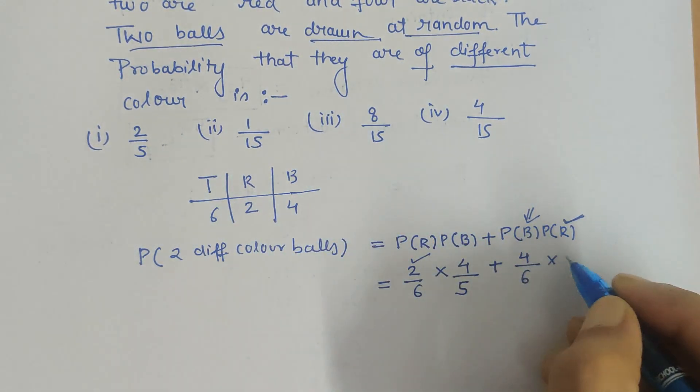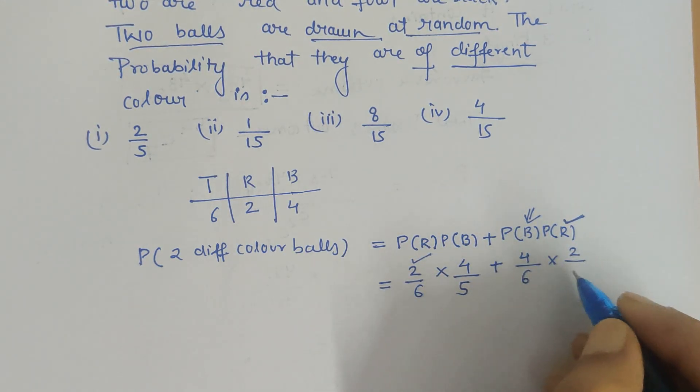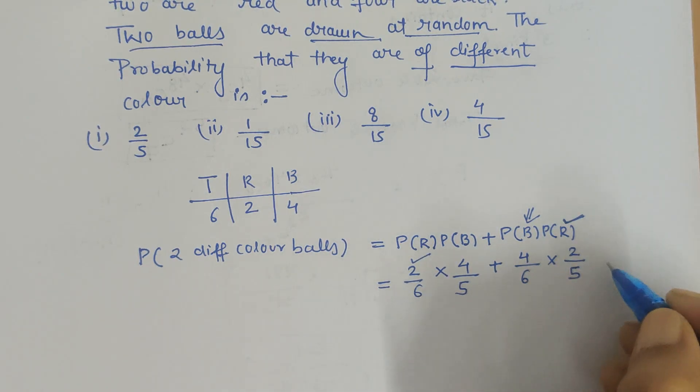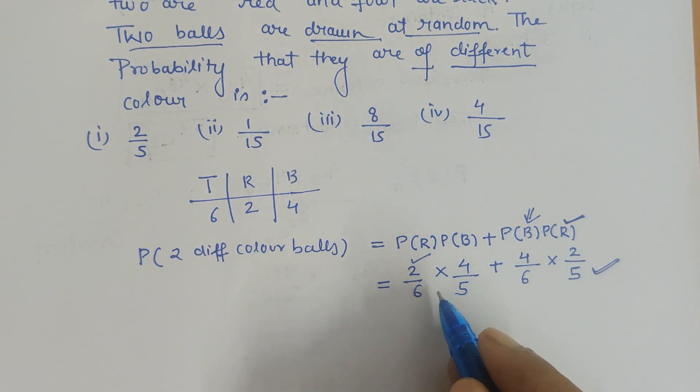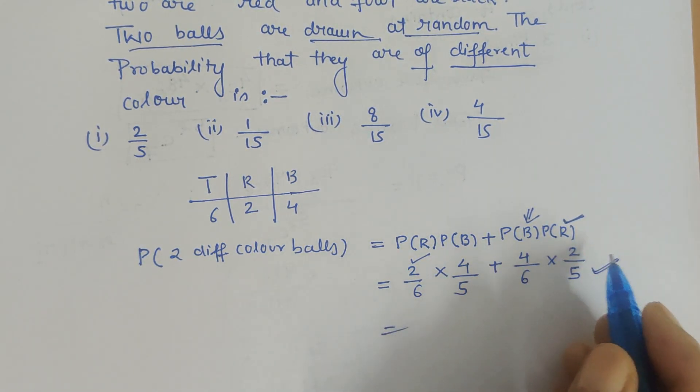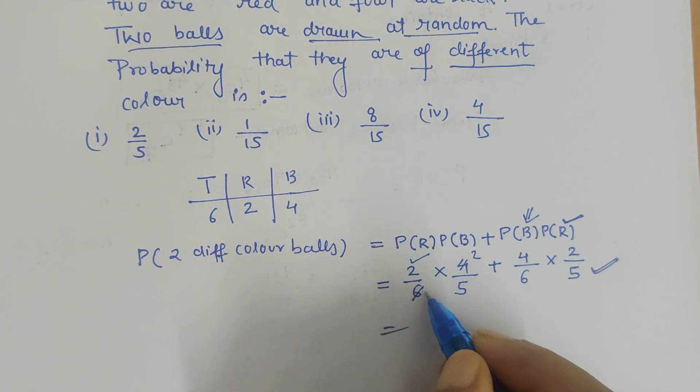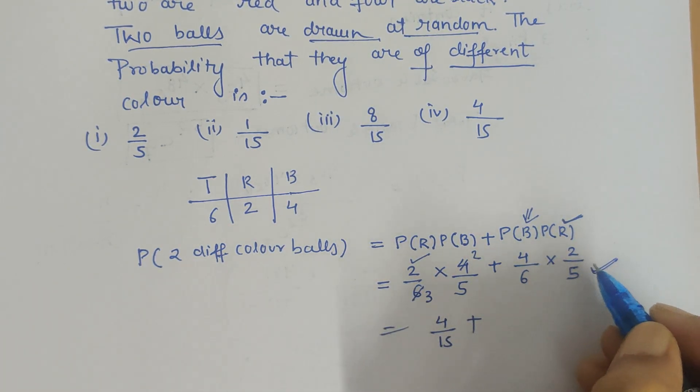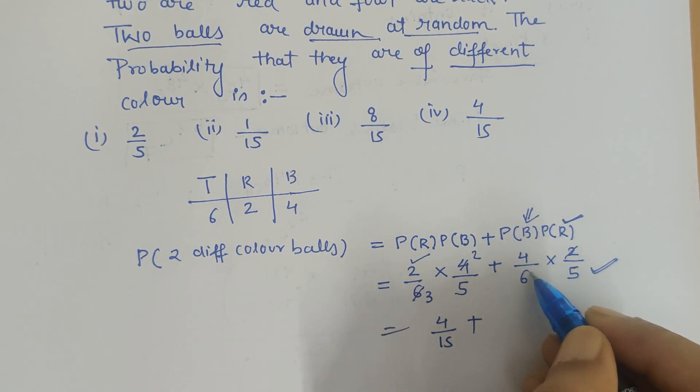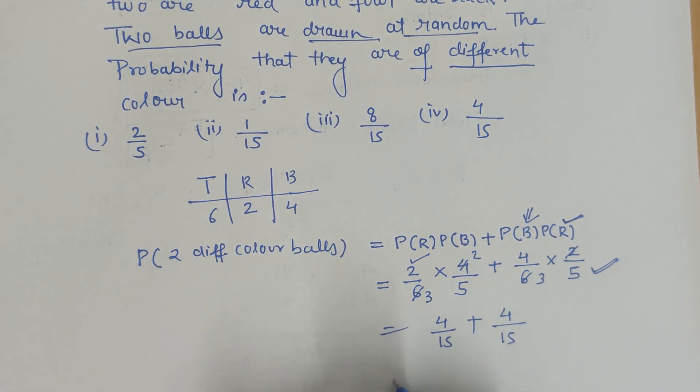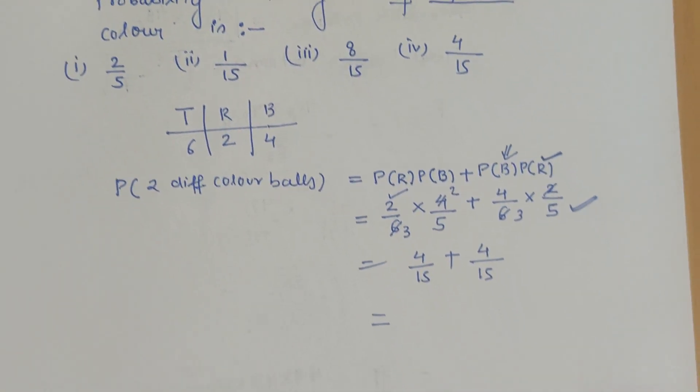So this is how we wrote our required probability. The only thing left is simplification. 2×4 is 8, 6×5 is 30, so 8/30 simplifies to 4/15. Plus here also we get 4/15. Now when we take the LCM, we get 4 + 4 = 8/15.